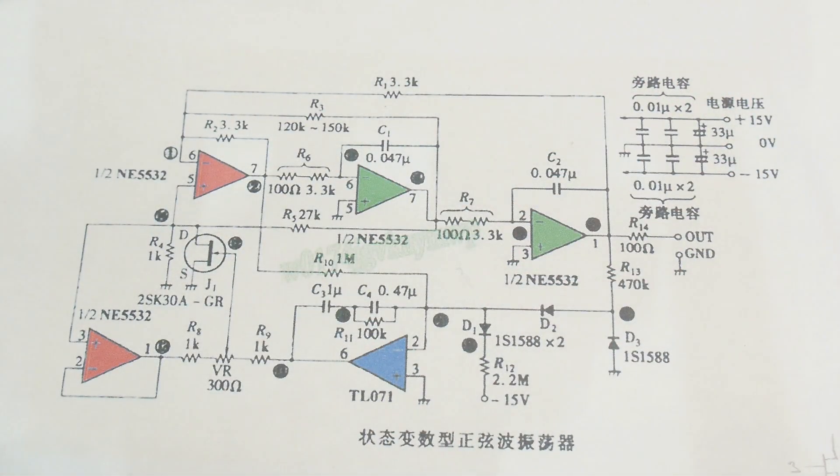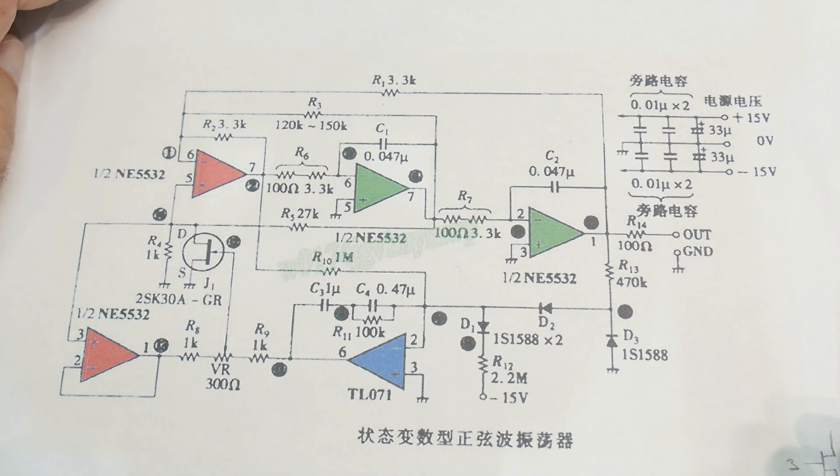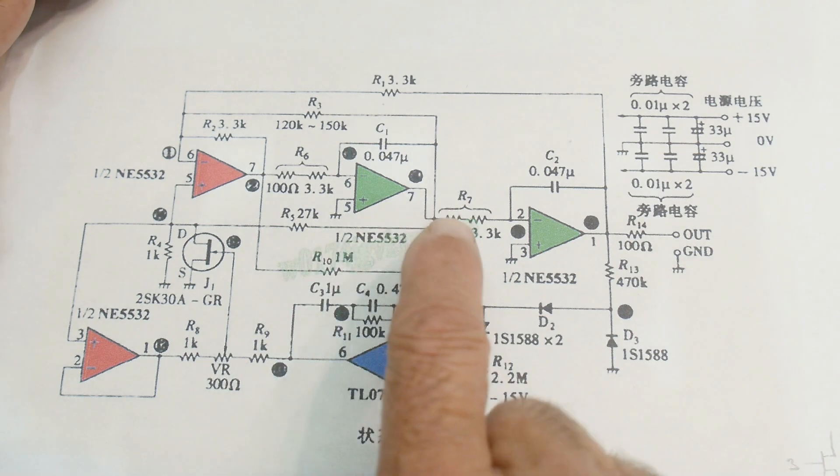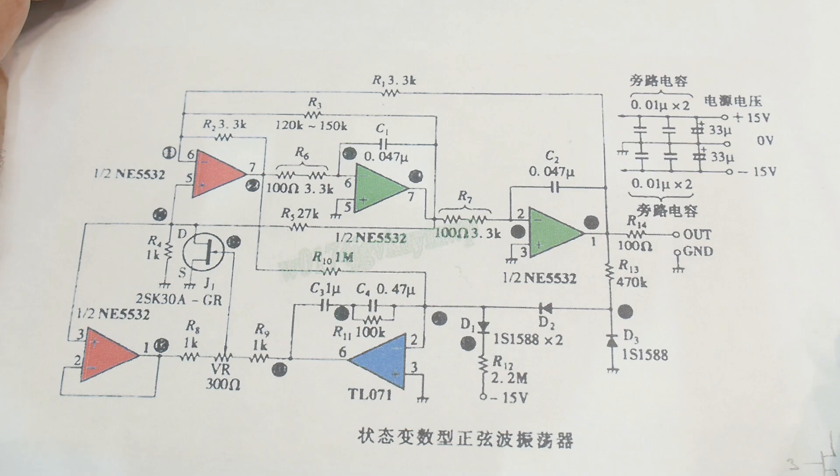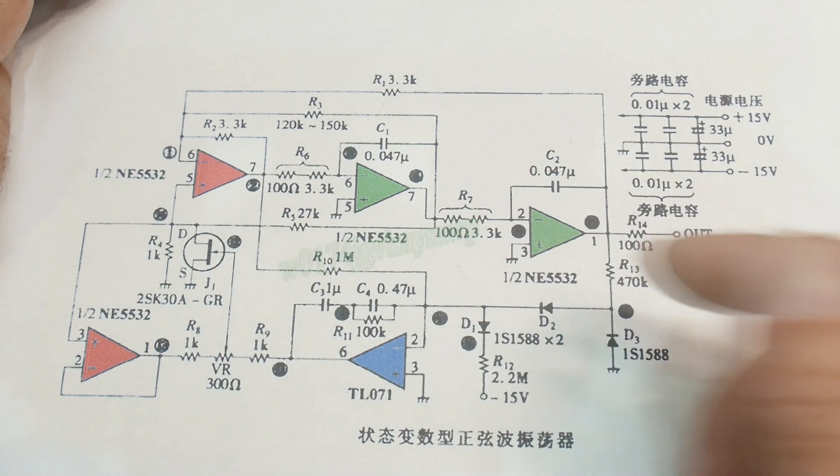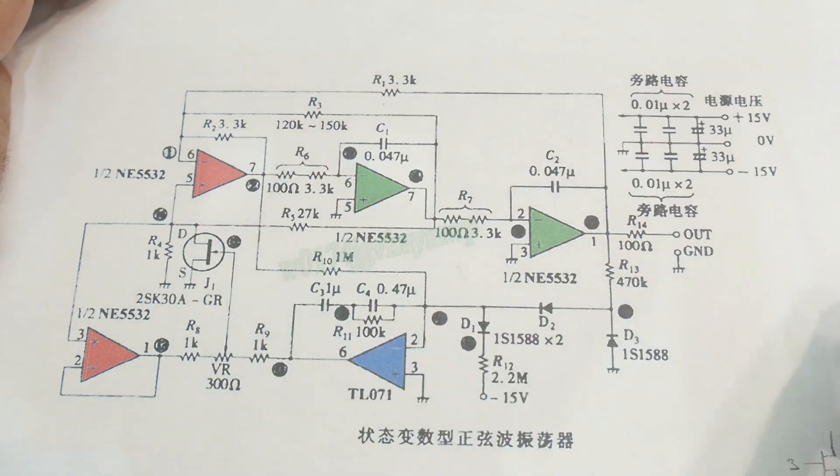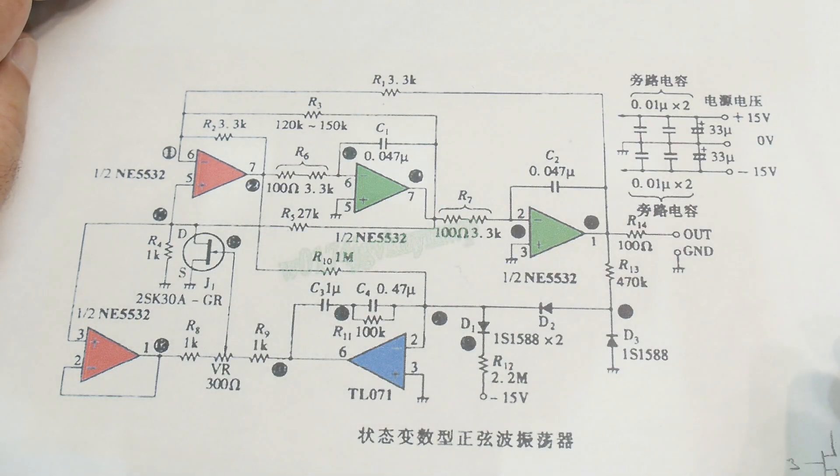So this is the schematic and this is what I built the device off of. It has an oscillator circuit here and then it has a leveling circuit here to keep it going right. This kind of takes the place of the light bulb in a Wien bridge oscillator.